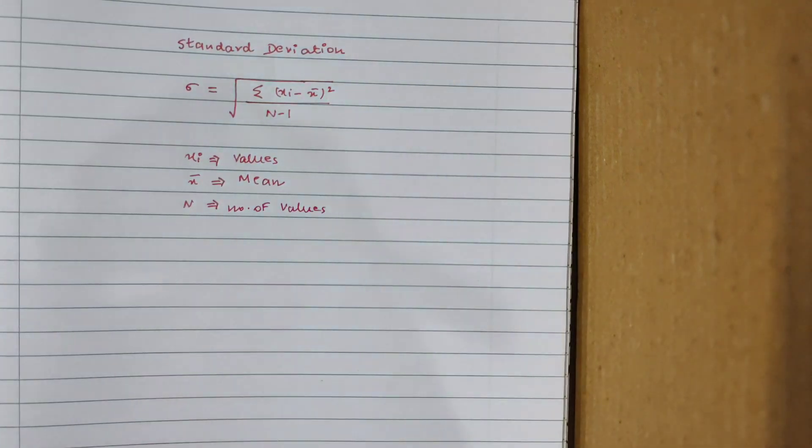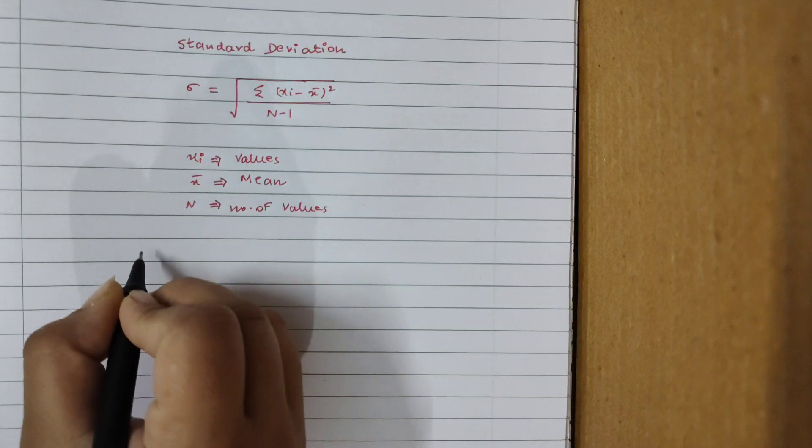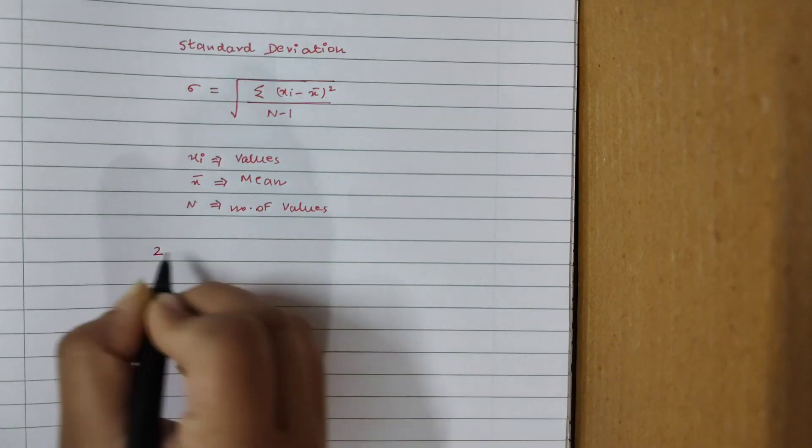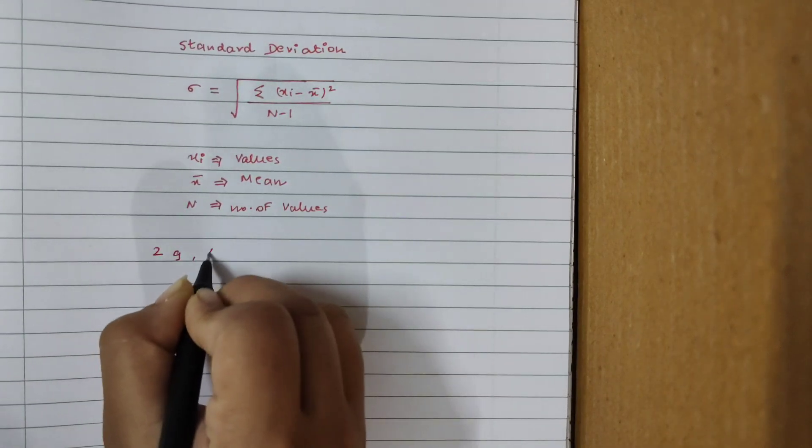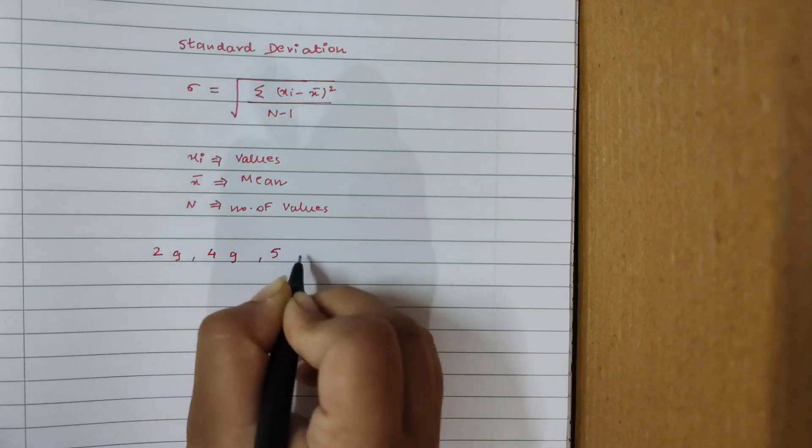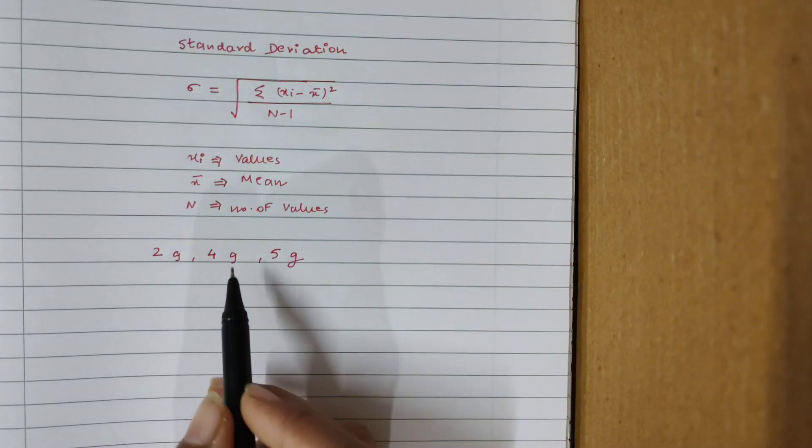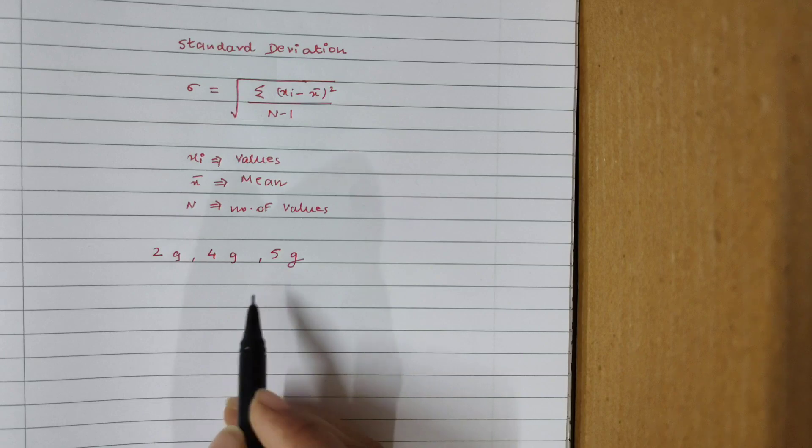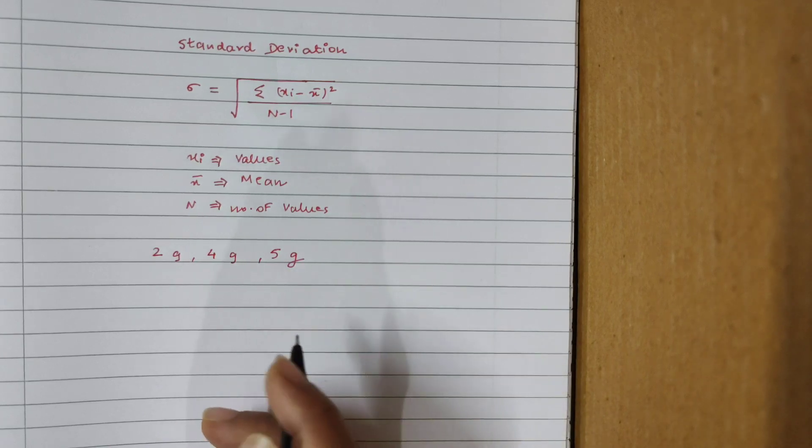n is nothing but the number of values, that means number of observations that you have taken in a particular experiment. Now just imagine I'm doing an experiment wherein I have three values. I took three observations and my readings are in grams. I'm just randomly taking small numbers so I can show you the method and the substitution. So just consider that I've done an experiment and I got the following values: 2 grams, 4 grams, and 5 grams. These are my three values, so this is x1, x2, x3. That's what I mean when I say xi.